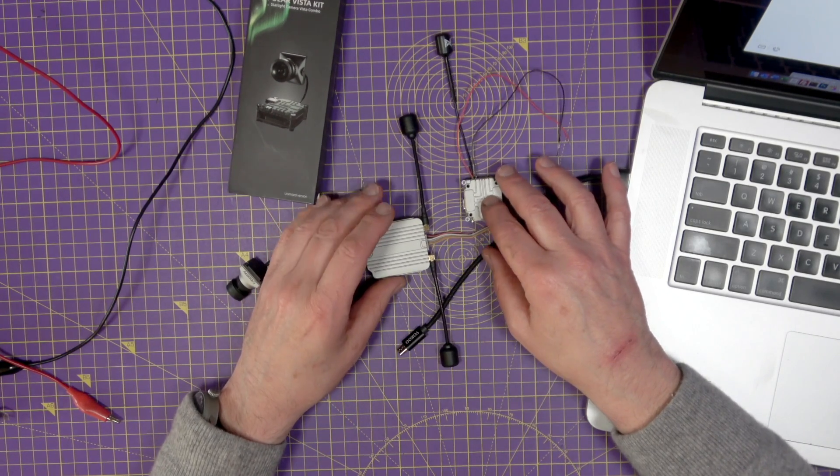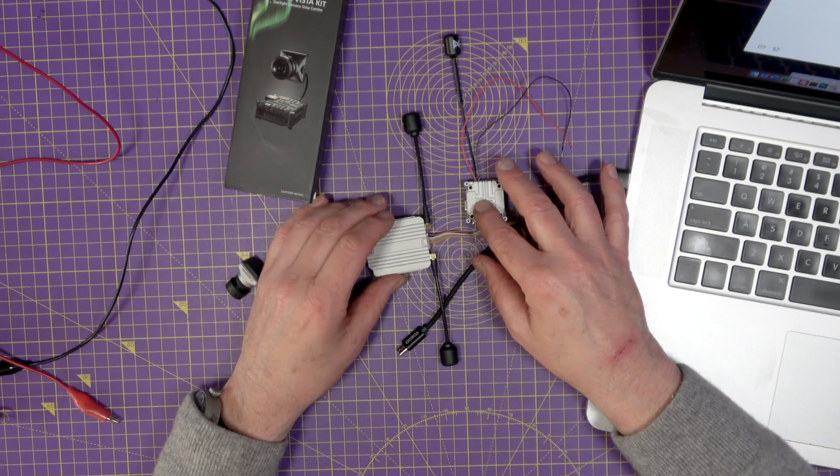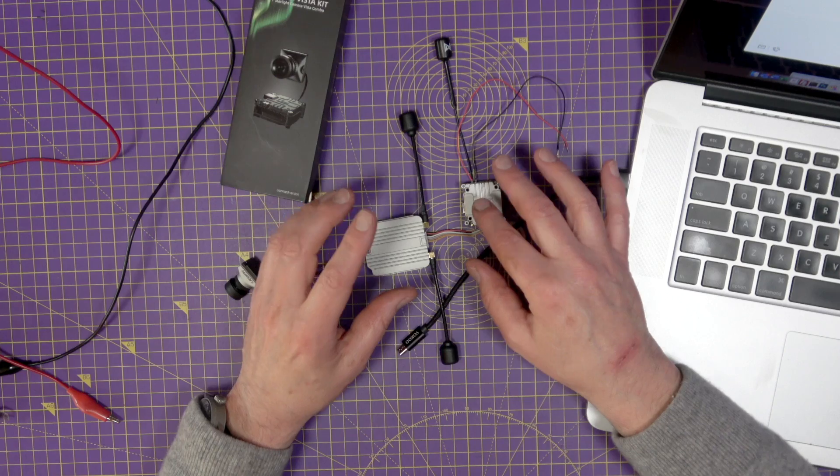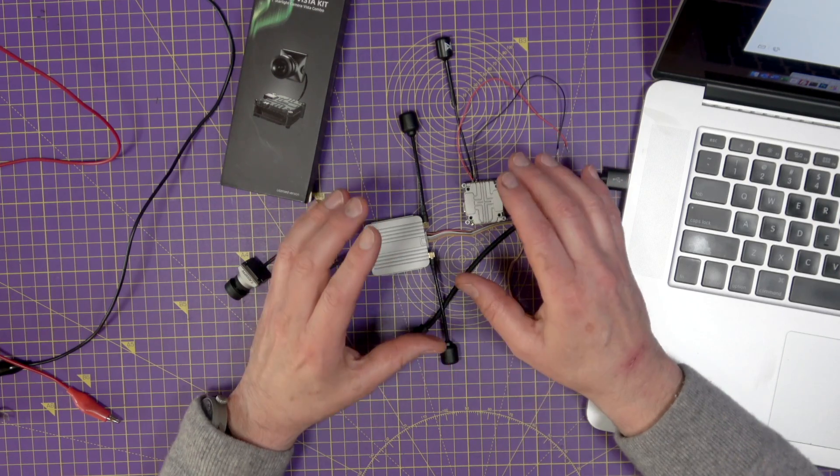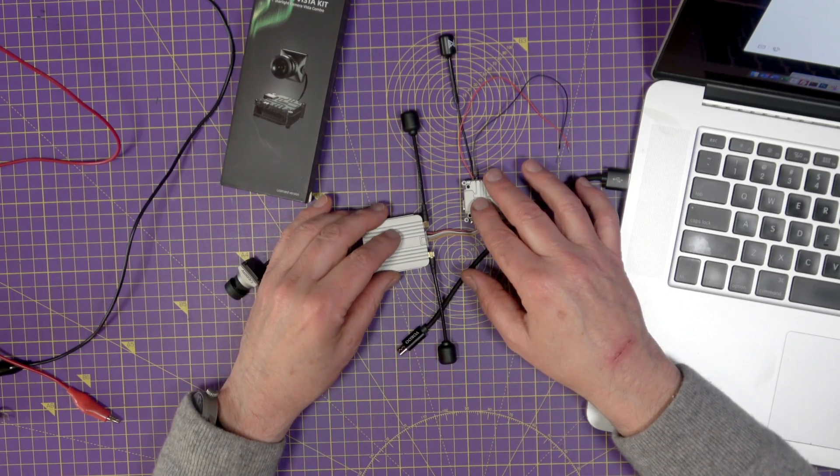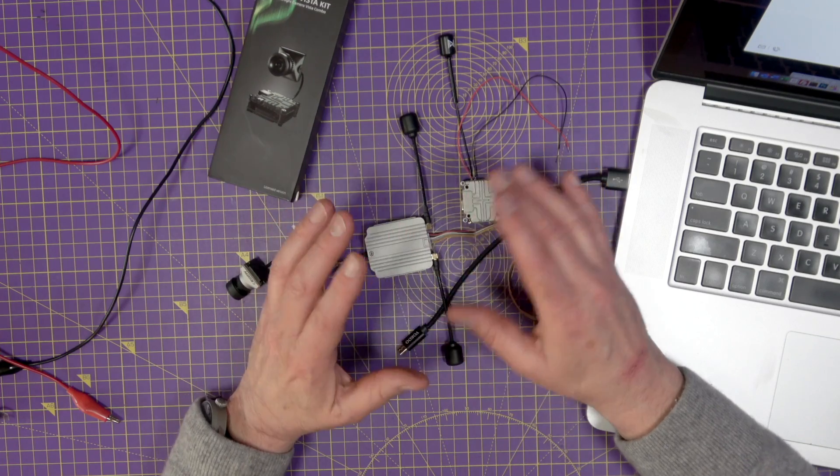A few days ago I made a video about a new DJI firmware release for their version 2 goggles that locks you out and means you can't roll back to previous versions of the firmware. Everybody's a bit suspicious about what DJI's motivation is for this and it's still not exactly clear.